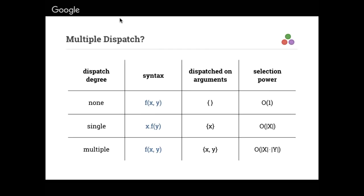What we're going to do is make one of the arguments special, and pick which version of F we call based on the type of that argument. To indicate it was special, people wrote X in front: X dot F of Y. So now, based on the value of X, you pick which version of F you're going to call. Y doesn't matter — it's just a normal argument. This increases our selection power by a drastic amount.